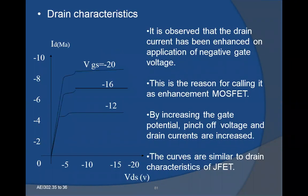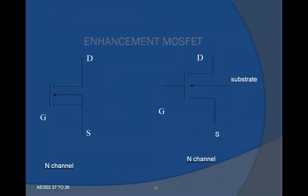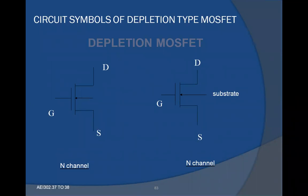This is the drain characteristics of MOSFET. We can observe that the drain current increases on application of positive gate voltage, which is the reason for calling it an enhancement MOSFET. By increasing the gate potential, the drain current increases. The curve is similar to the drain characteristics of JFET. In the enhancement MOSFET symbol the channel is shown split, while in the depletion MOSFET the channel is continuous — this is the difference in the symbols.